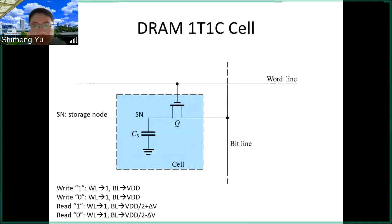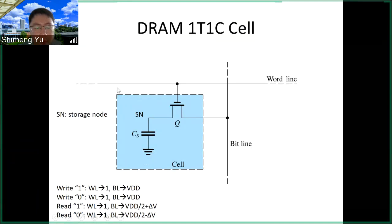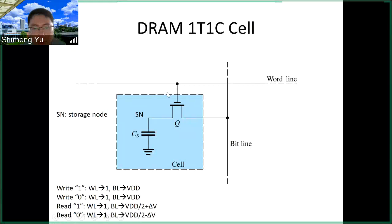Let's look at the DRAM implementation in circuits. This is the one-transistor, one-capacitor — 1T1C — cell for DRAM. What we draw here is just one cell of the DRAM memory array. DRAM is a binary memory, meaning one cell stores one bit of information, either zero or one. Here we show the wordline as the horizontal row and the bitline as the vertical column. This is one intersection of the wordline and bitline — one memory cell. We can duplicate cells horizontally and vertically to build a two-dimensional array, as discussed earlier. Today we focus on this memory cell inside this box.